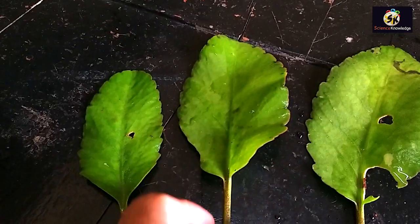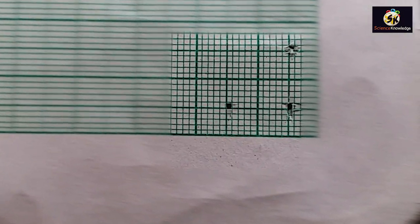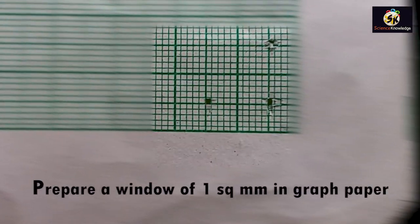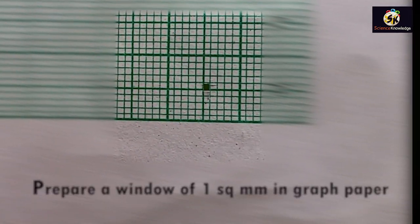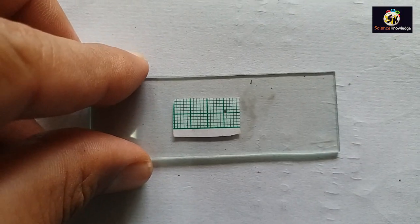For this purpose we have to prepare a window of one square millimeter on the graph paper. With the help of a fine blade we will carefully cut a window of one square millimeter, and then this piece of graph paper will be pasted on a slide.